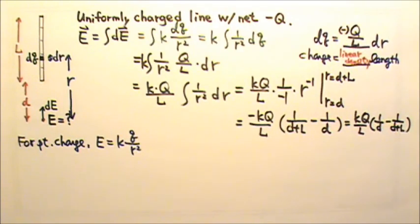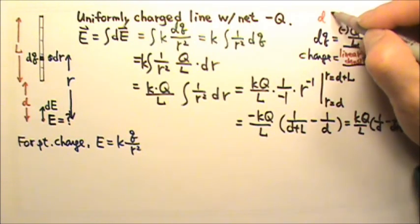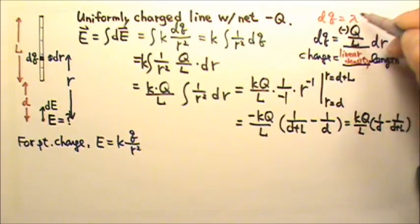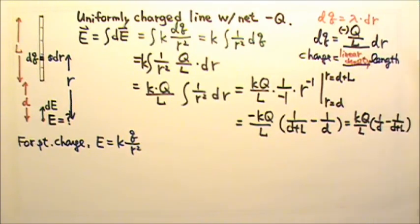In that case, of course, we would just say that dQ equals the linear charge density lambda times the length dr.